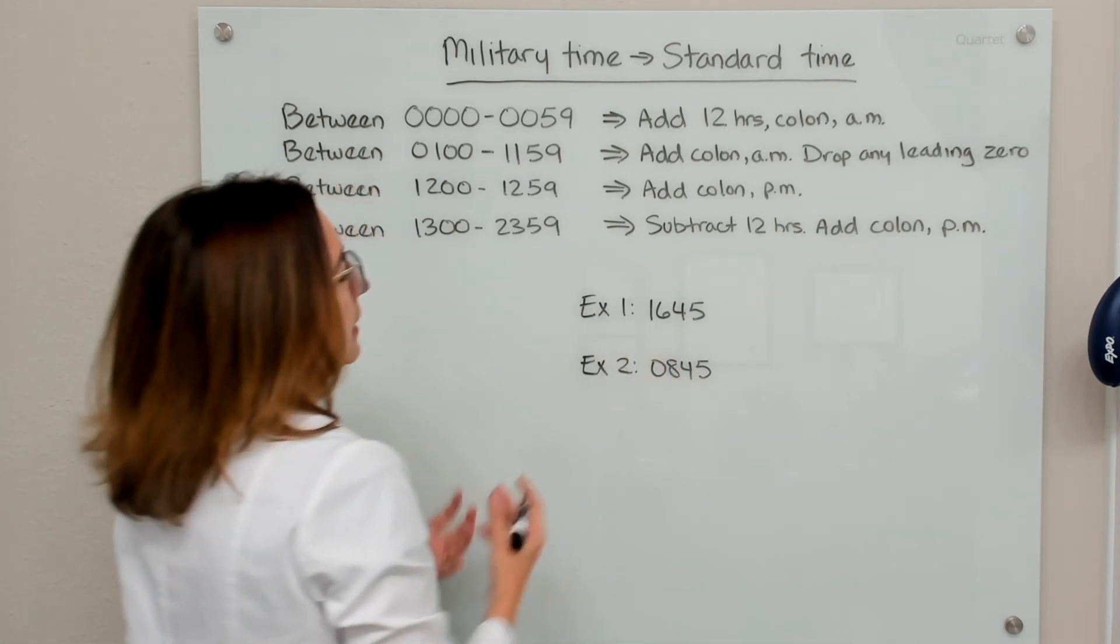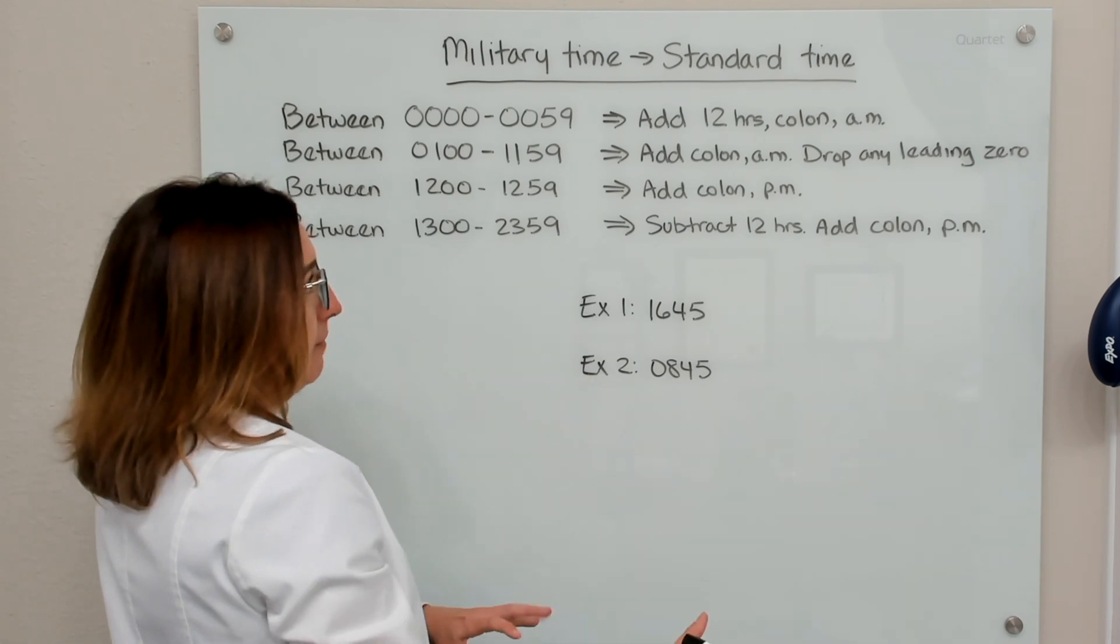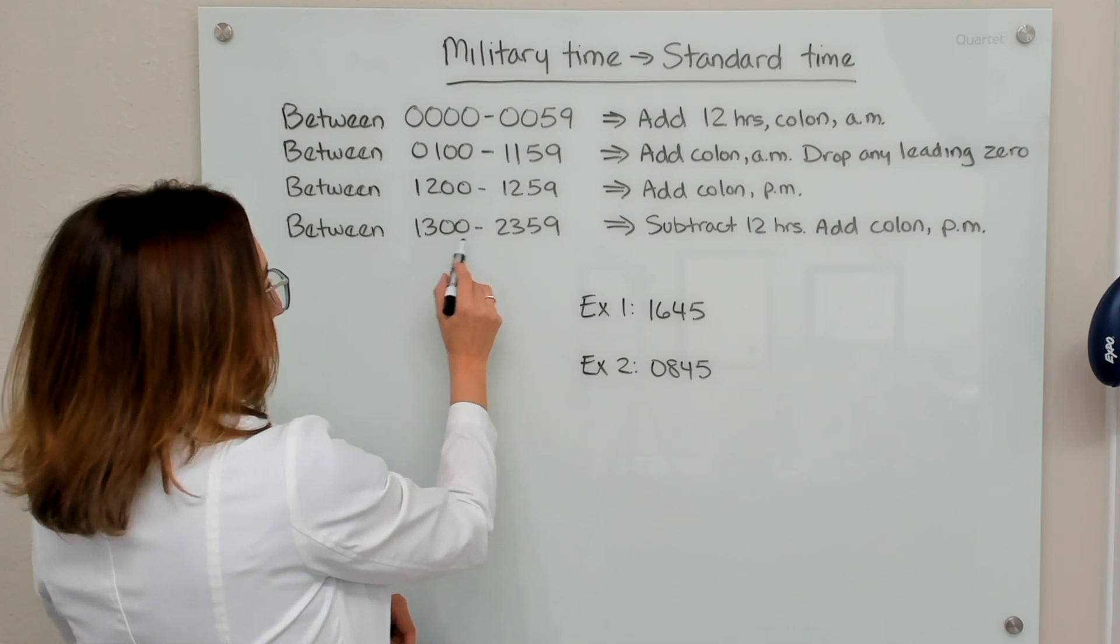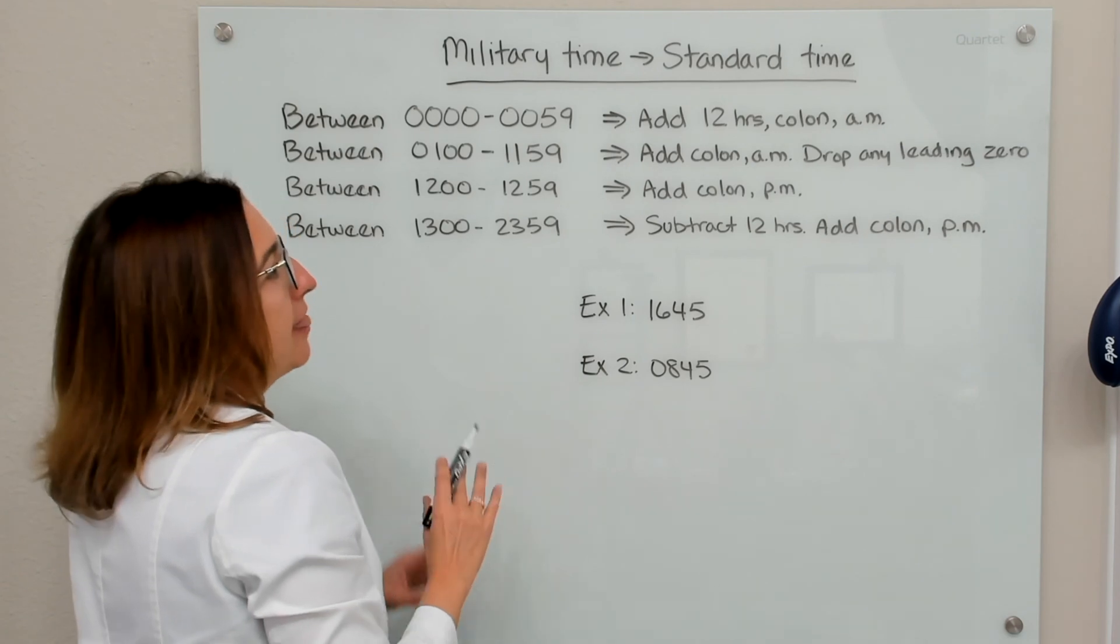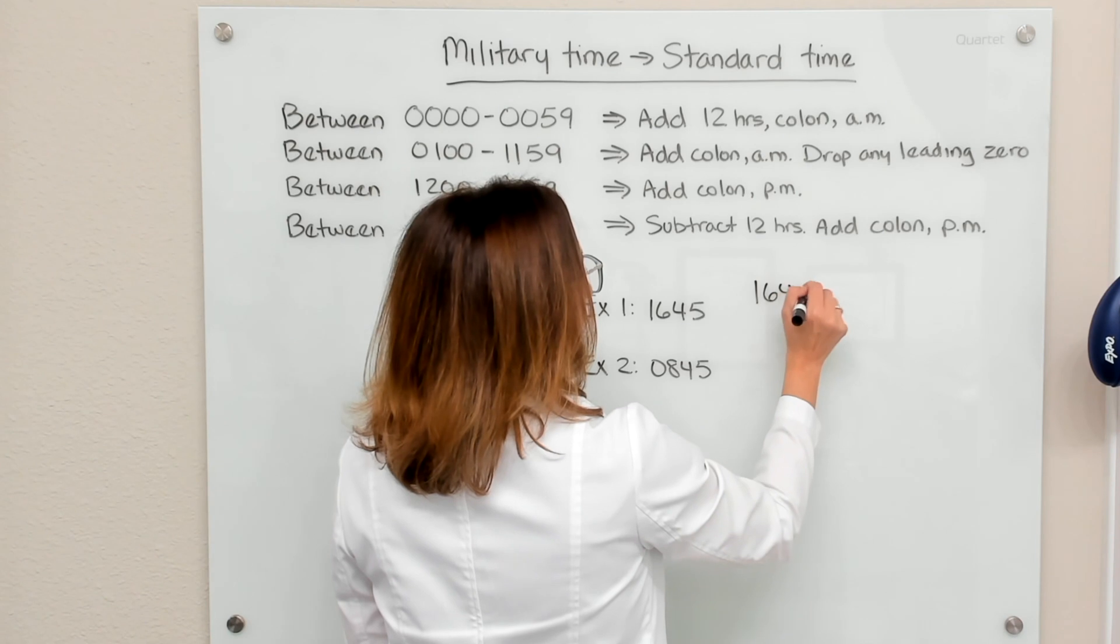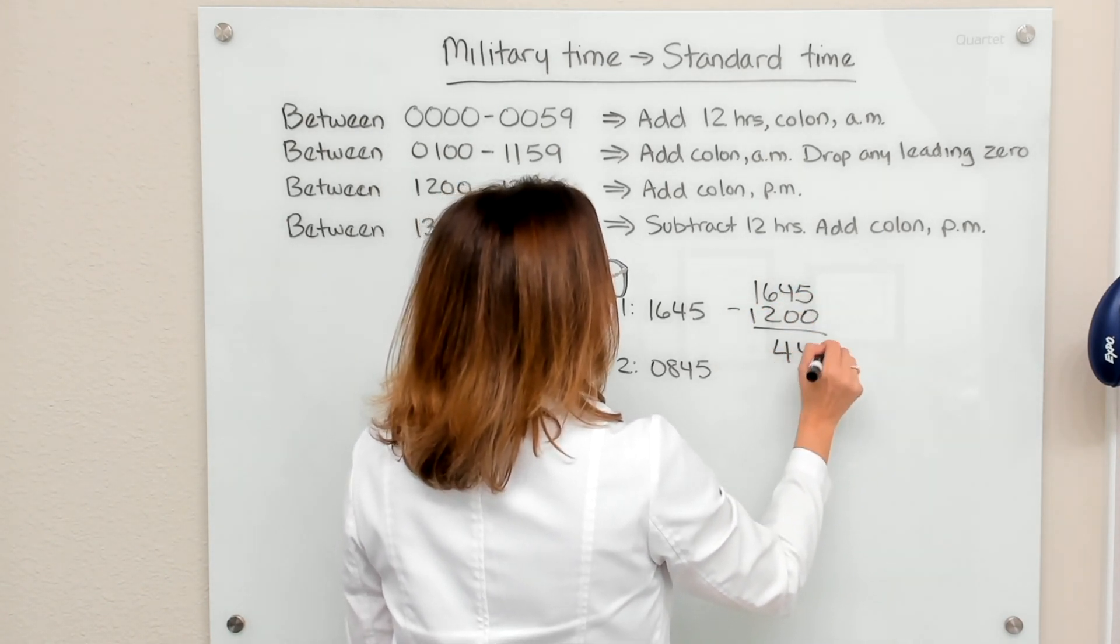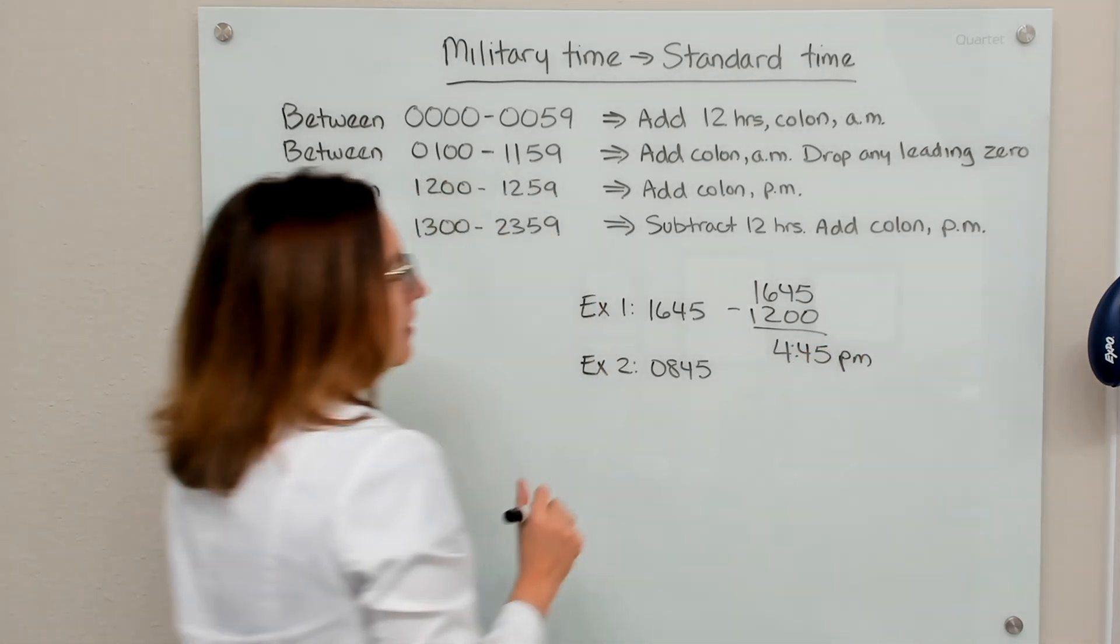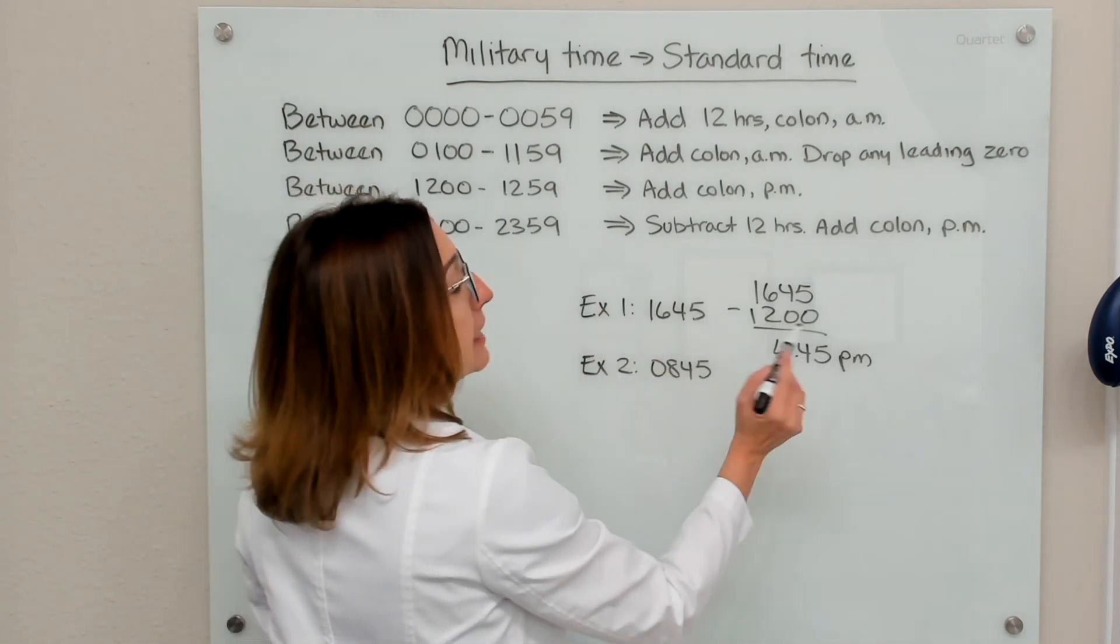With our first example, we have a military time of 1645, and we want to take that to standard time. So if you kind of look at our rules here, 1645 falls within this range here, which means we're going to subtract 12 hours and then add a colon and a p.m. So if I take 1645 and I subtract 12 hours, I get 445. And then I just need to add that colon and a p.m. So 1645 military time is 4:45 p.m. standard time.